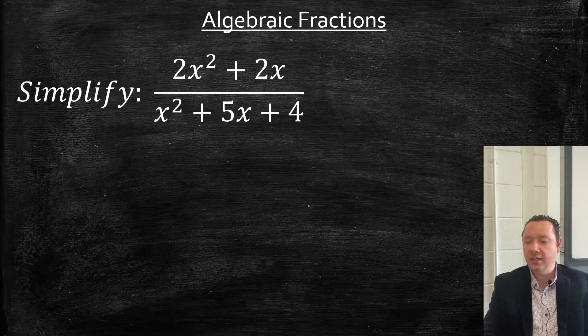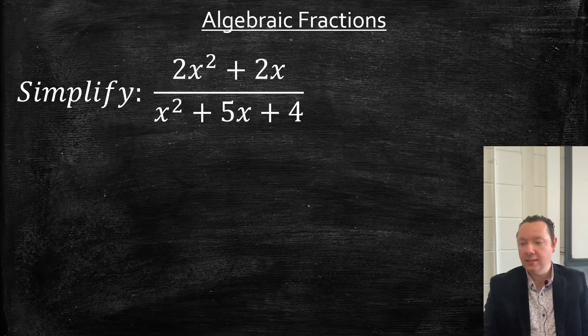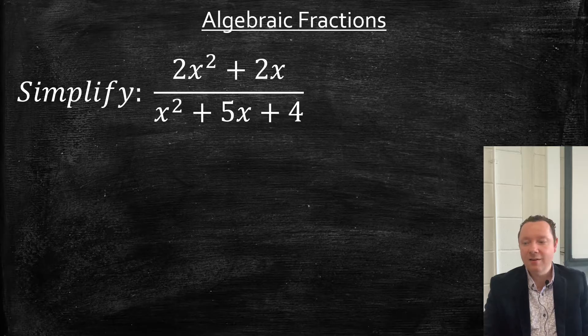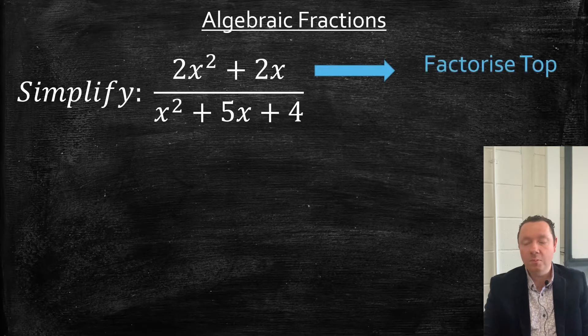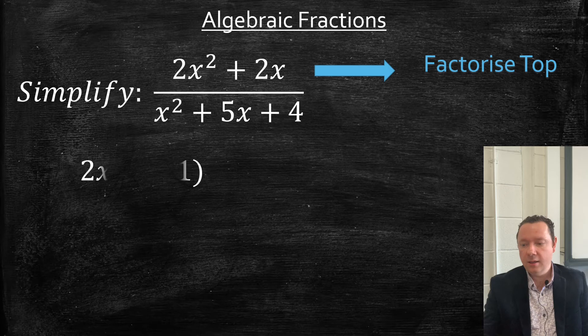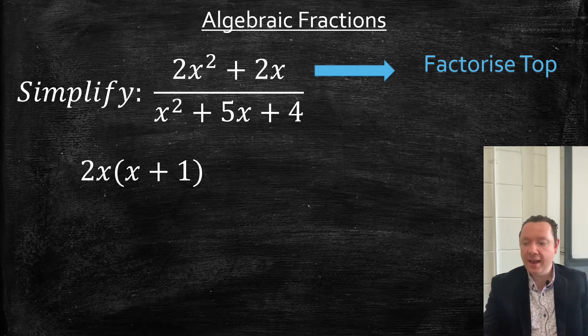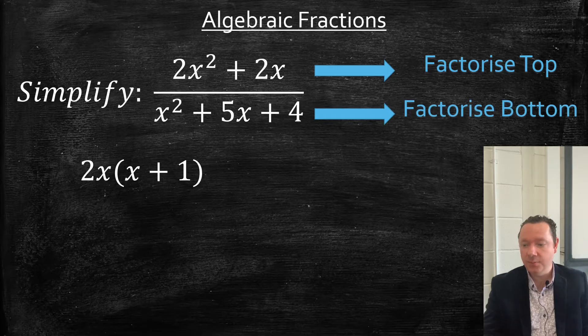First one says simplify (2x² + 2x)/(x² + 5x + 4). Your method is always to do this: try and factorise the top. Let's see if we can do that. Well, 2x is a common factor, so I get 2x(x + 1). Then go ahead and do the same to the bottom. So I'll try and factorise the bottom.